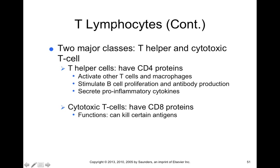There are two major classes of T lymphocytes, which are part of your specific adaptive or learned immune response: T helper cells and cytotoxic T cells. T helper cells have CD4 proteins and function to activate other T cells and macrophages. They can also stimulate B cells by releasing inflammatory cytokines, which can activate B cells to release antibodies.